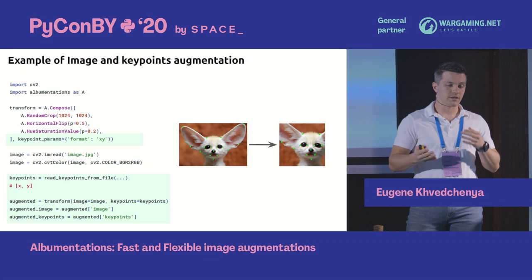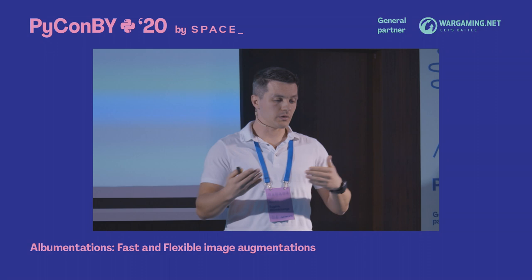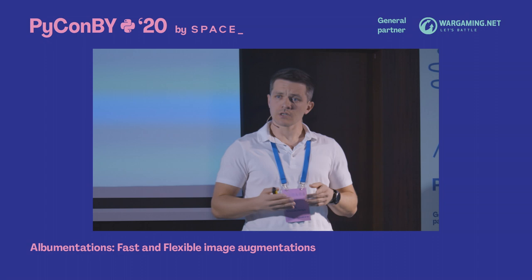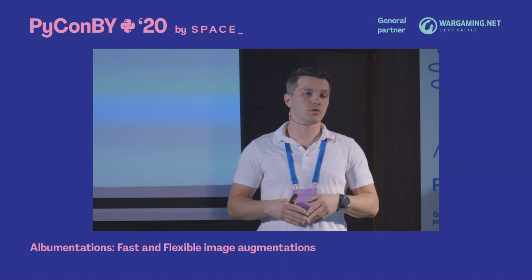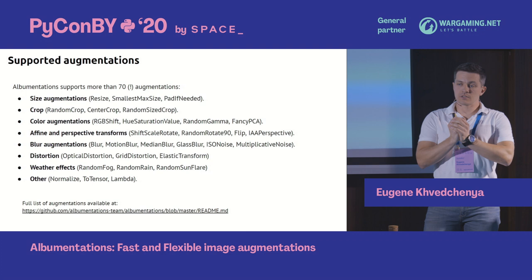Last but not least is key point augmentation, such as facial landmarks. Again, you specify the format of the key points, pass them as an additional target, and the result is ready. You can also combine targets — you can send image, mask, and bounding boxes simultaneously and it will work perfectly.